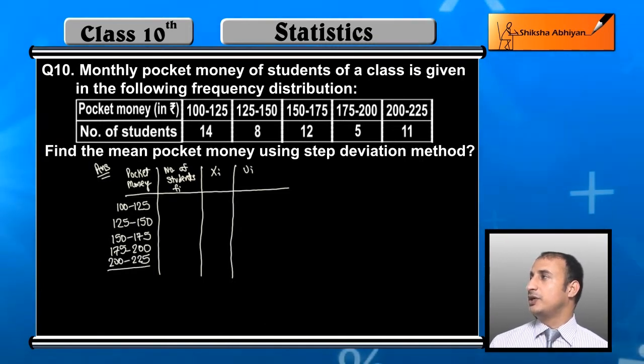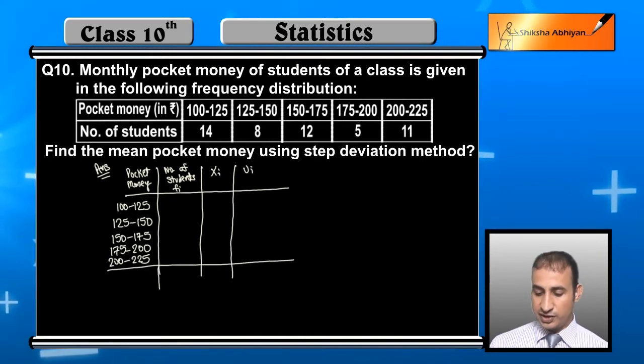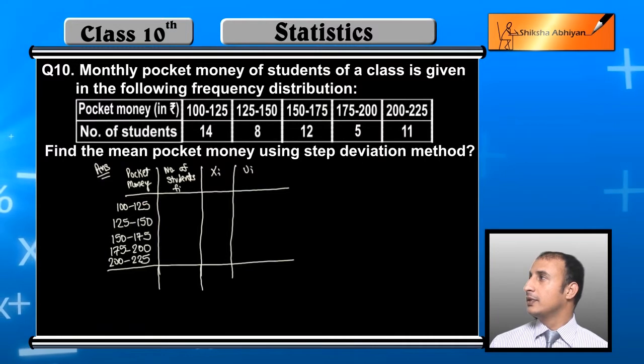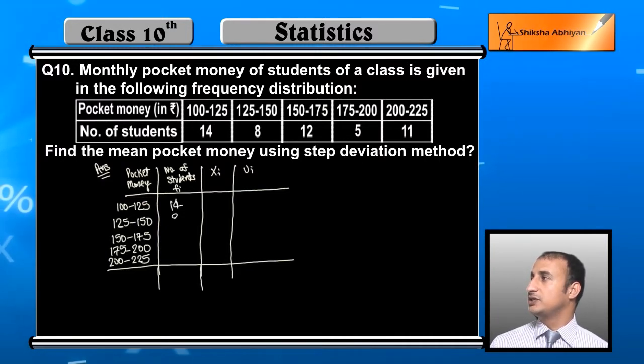Now number of students - for 100 to 125 we have 14, then 8, next class frequency is 12, then 5, and 11. So sigma fi, the summation of frequencies, total is 50.